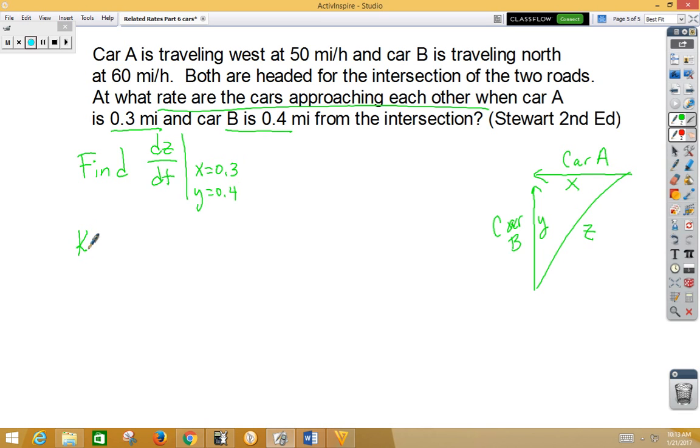Our known rate of change is the speed of the cars. They gave us both speeds: dx/dt, car A is traveling at 50 miles per hour, and dy/dt, car B is traveling at 60 miles per hour.